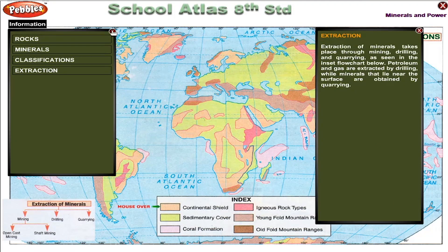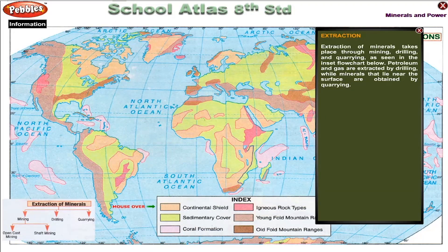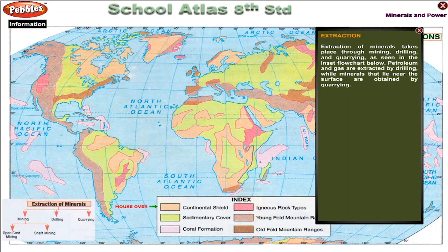Minerals Extraction. Extraction of minerals takes place through mining, drilling and quarrying, as seen in the inset flowchart below. Petroleum and gas are extracted by drilling, while minerals that lie near the surface are obtained by quarrying.